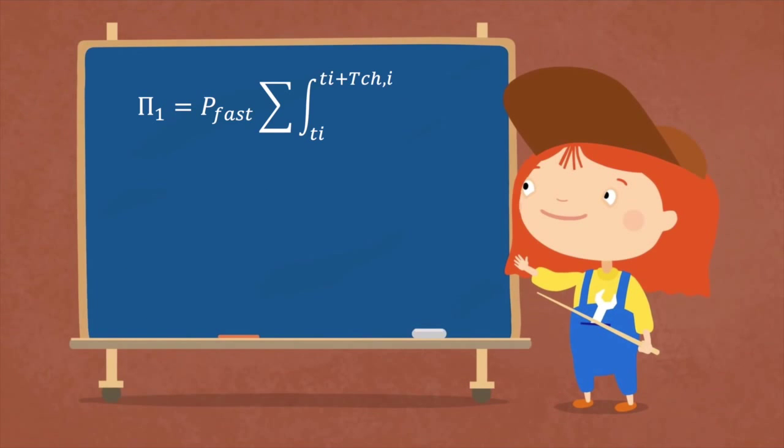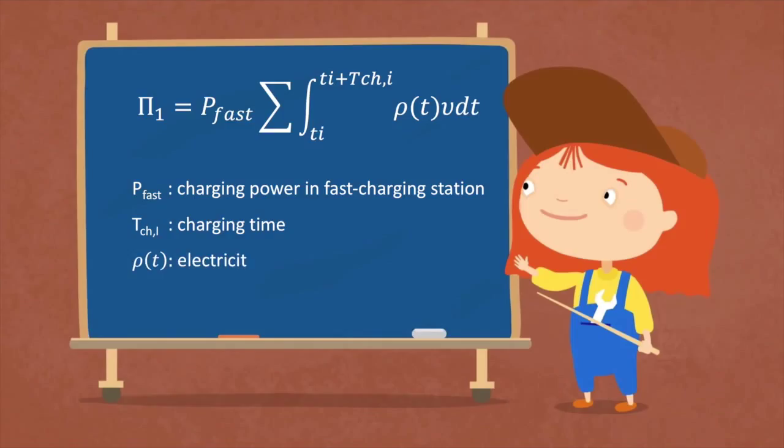For Pi-1, the fast charging cost, P-fast denotes the fast charging power, T defines the charging time, ρ-T is the electricity price at time T, and V is the profit factor in charging station.